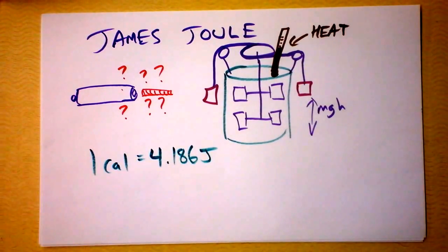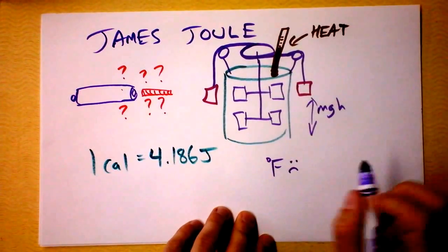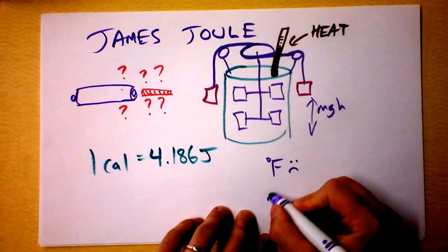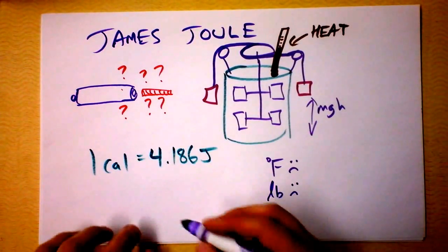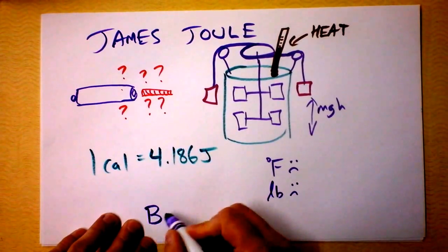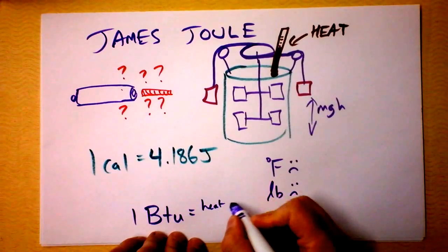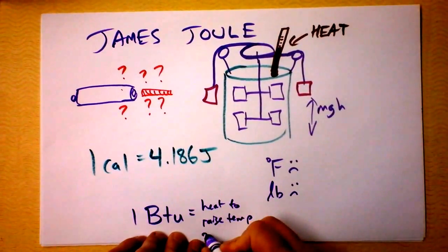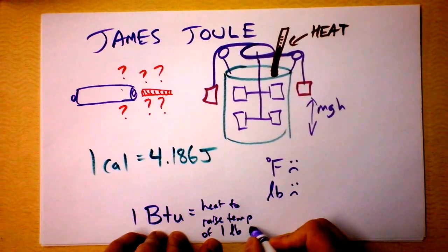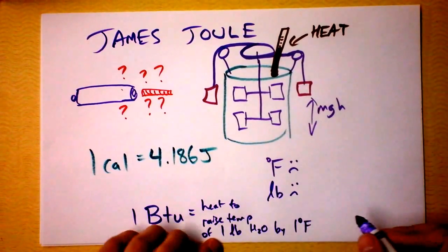And then there were the competing physicists. And these folks like to think in Fahrenheit. Boo, Fahrenheit. And they like to think in pounds. Boo, pounds. And so they developed this unit called a British Thermal Unit. And they said one British Thermal Unit is the heat to raise temperature of one pound of water by one degree Fahrenheit. Dang. What a lousy unit.